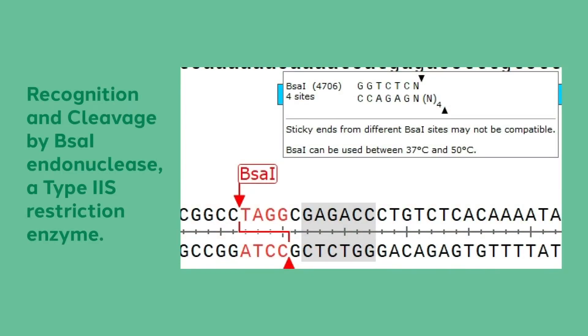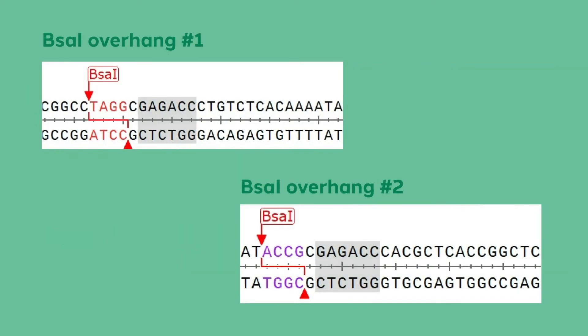Golden Gate cloning is a cloning technique that exploits unique features of type 2S restriction enzymes. Type 2S restriction enzymes are characterized by cleaving outside of their recognition sequence. The sequence present at the cleavage site is determined based only on its location relative to the recognition sequence. BSA1 is a type 2S restriction enzyme commonly used in Golden Gate cloning. Since cleavage occurs at a set distance from the recognition sequence, the composition of the overhang can vary from cleavage site to cleavage site.